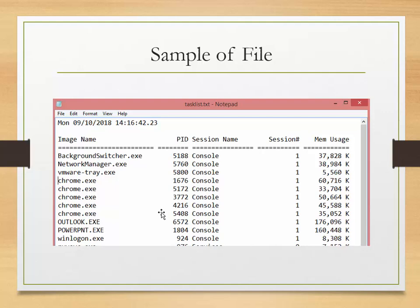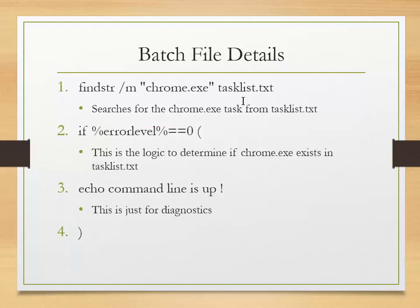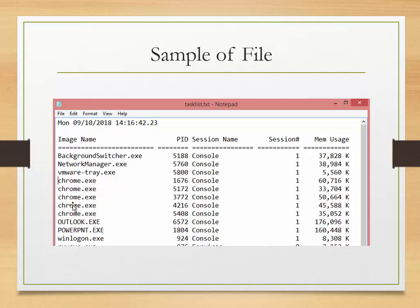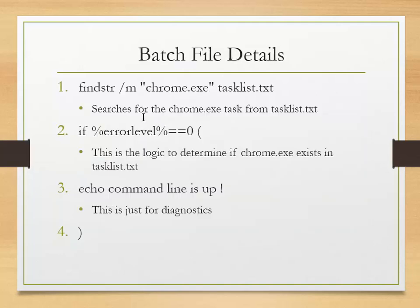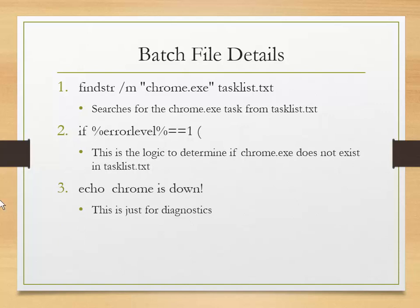A lot of people didn't even know tasklist was in Windows 8, which always makes me chuckle. So for the batch file details: the first thing we do is findstr /m and then chrome.exe — that's the task I'm looking for in the list. It'll search the file and return either a 0 or a 1. If it's 0, that means it exists, so I put a little echo message like 'command line is up' or 'chrome is up' — whatever you want displayed on screen as a diagnostic. Then if error level equals 1, that means it's not there, so I echo 'chrome is down' and send the email.